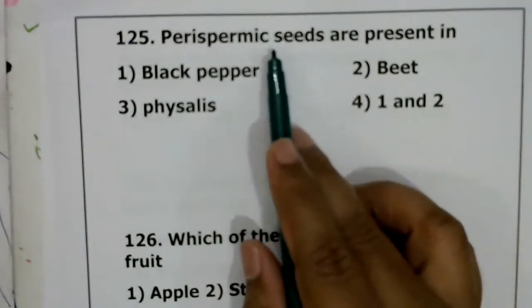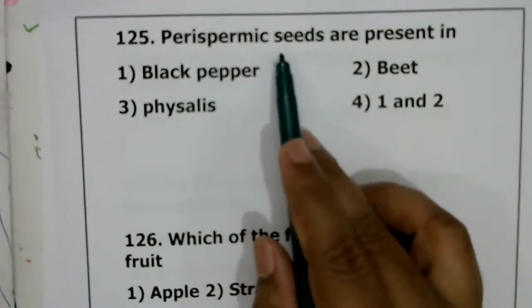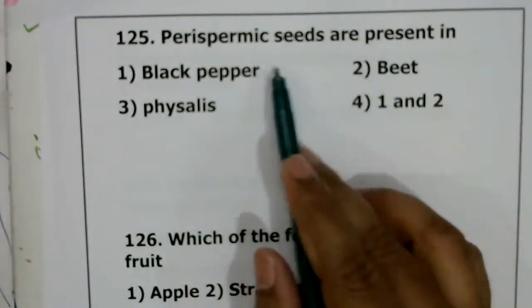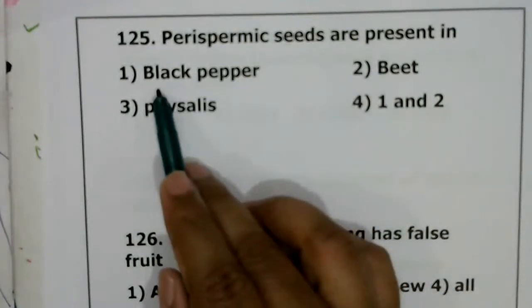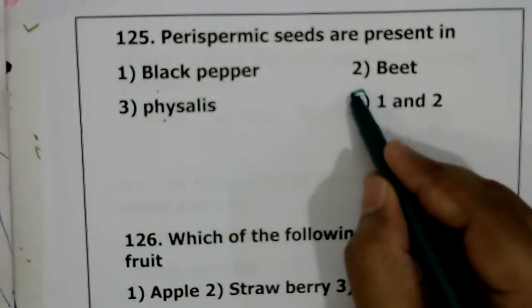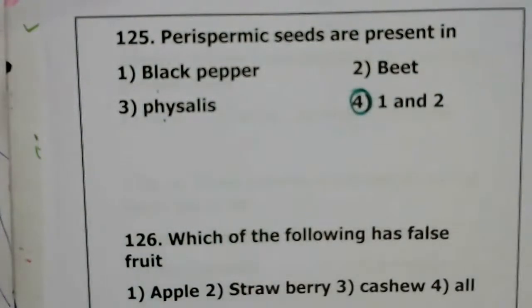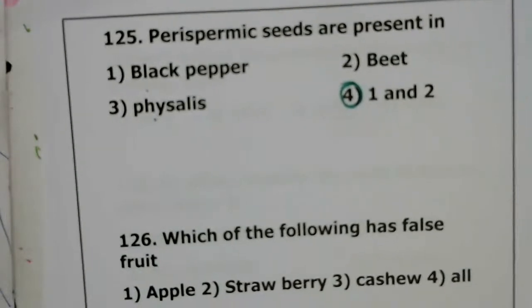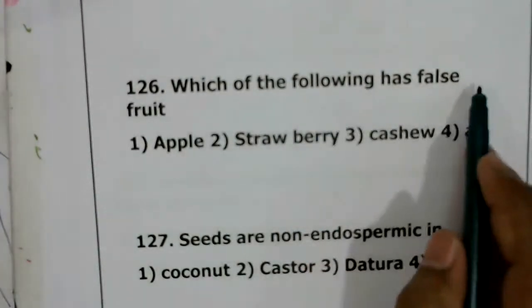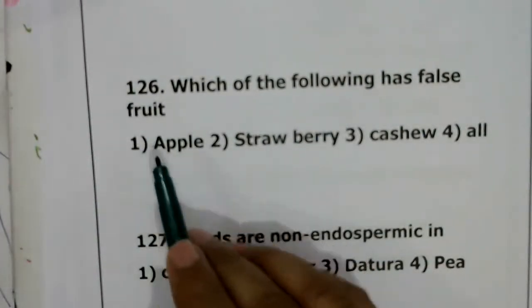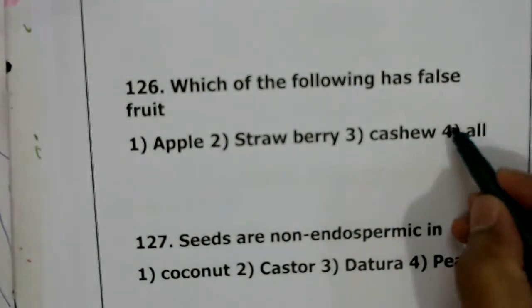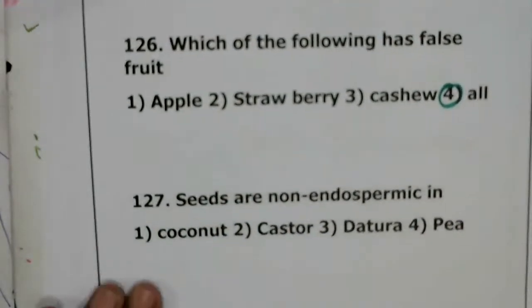Perisperm is persistent nucellus present in black pepper, beet, and Physalis — fourth option. Question on false fruit: apple, strawberry, and cashew all are false fruits — correct answer is all of these.